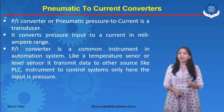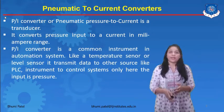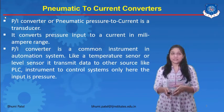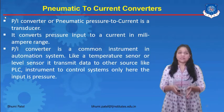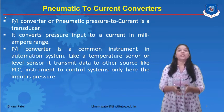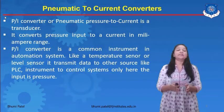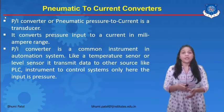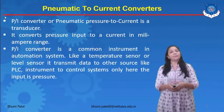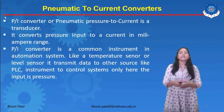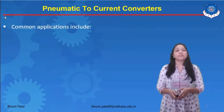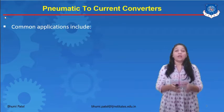The pneumatic to current converter is a common instrument in the automation system, like a temperature sensor or a level sensor. It transmits data to other sources like PLC, DCS, SCADA, or instrument control systems. Here, the input is pressure, and this pressure is converted into current.